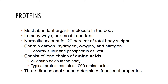Proteins contain carbon, oxygen, hydrogen, nitrogen, and sometimes sulfur or phosphorus. They're made by combining different combinations of 20 different naturally occurring amino acids. Polymers of amino acids are joined together by peptide bonds to form proteins. Amino acids are linked together by dehydration synthesis and proteins can be broken down by hydrolysis of the peptide bond.